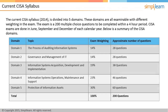Below is a summary of the CESA domains. Domain 1 covers auditing information systems and accounts for 14% of the CESA exam. Domain 2 covers governance and management of information technology and accounts for 14% of the CESA exam. Domain 3 covers information systems acquisition, implementation, and development and accounts for 19% of the CESA exam.